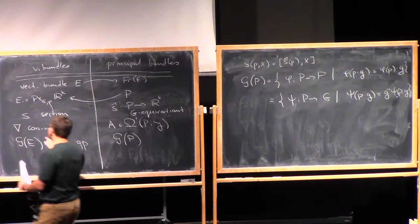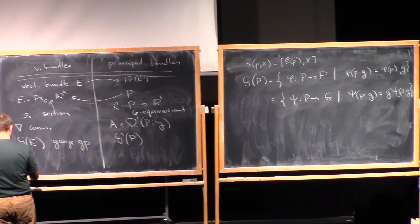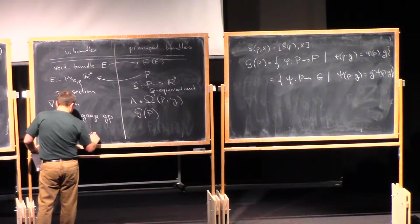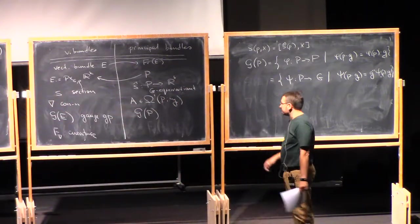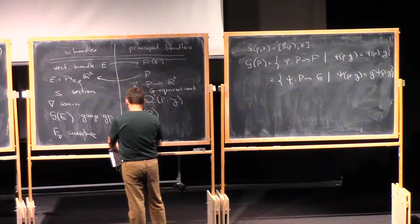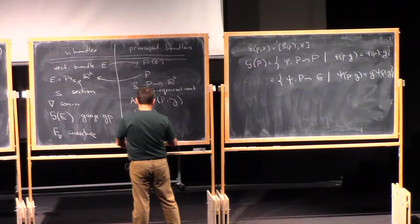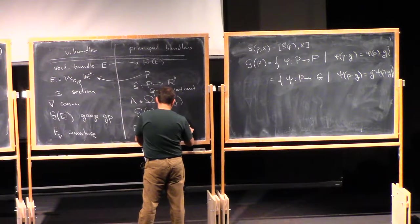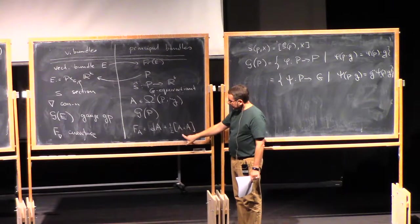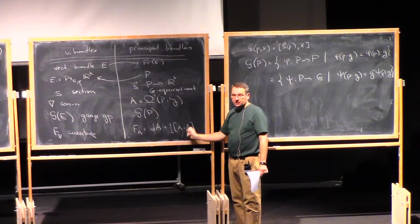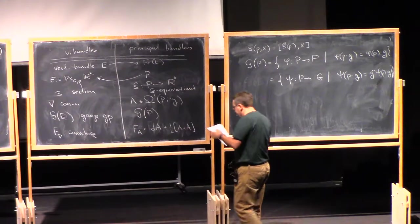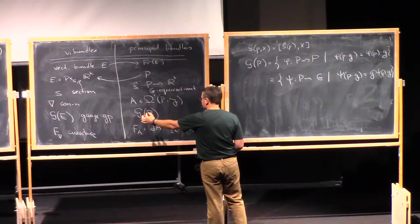Now, since we have here also discussed the notion of the curvature, so for connection nabla, I have the curvature F_nabla, which was defined as a composition of the differentials, and you have a corresponding notion of the curvature here for a connection A.